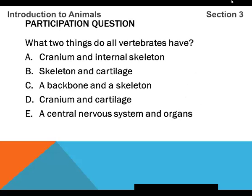What two things do all vertebrates have? A, a cranium and an internal skeleton. B, a skeleton and cartilage. C, a backbone and a skeleton. D, a cranium and cartilage. E, a central nervous system and organs.